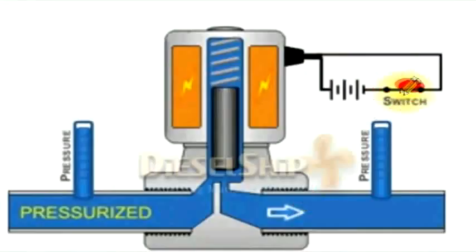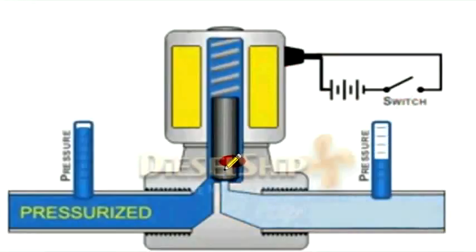Now the switch is opened. The coil is de-energized and the valve starts to shut. Once the valve is shut, the pressure on the downstream reduces, and upstream and downstream are totally separated.